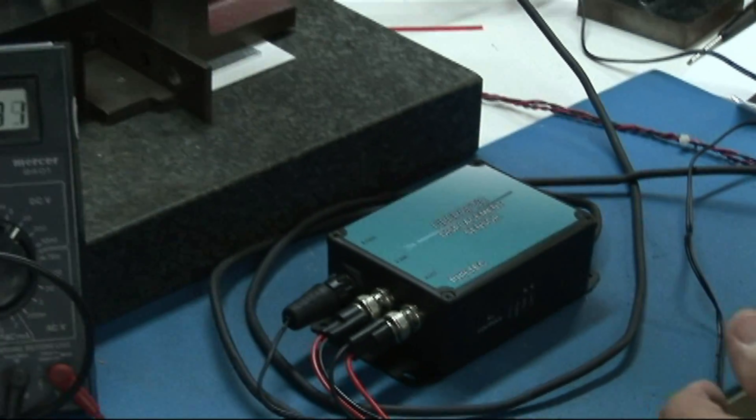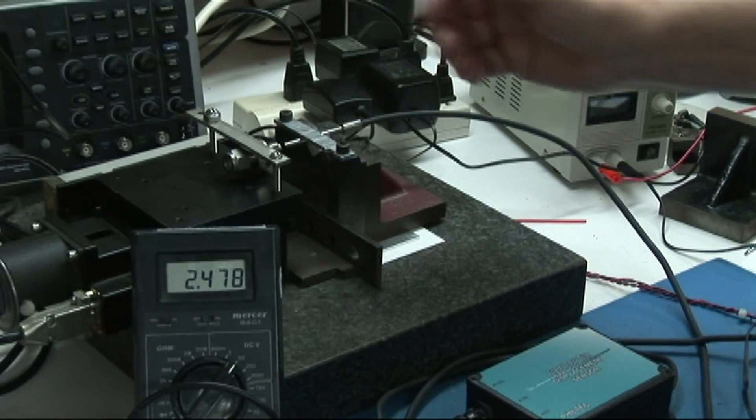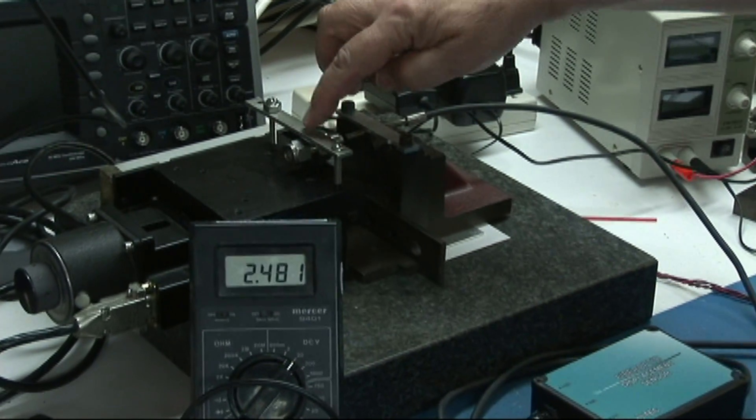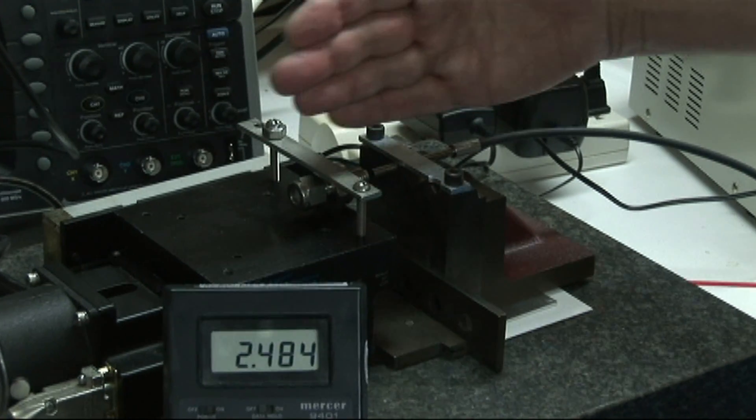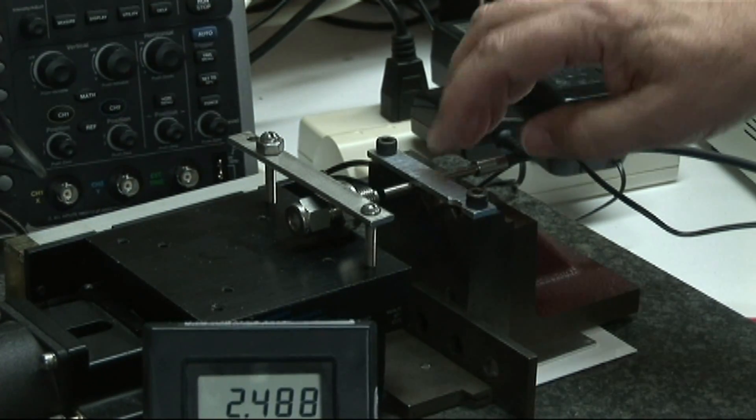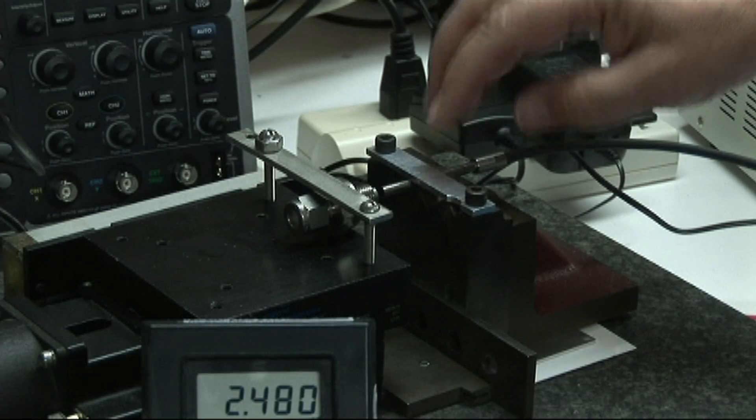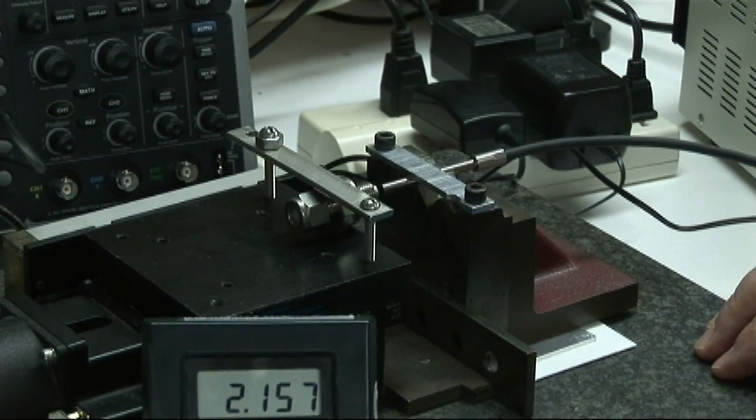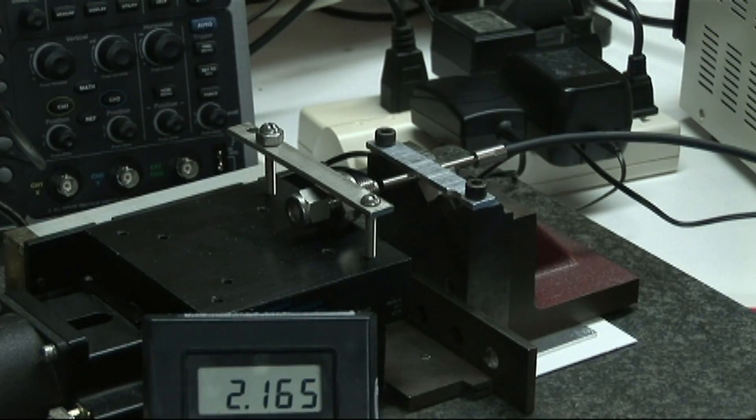Now, on a linear ball-bearing stage here, we have your target pin, which is mounted in a compression fitting and clamped, and it's mounted perpendicular to the axis of motion. We have the sensor tip, mounted perpendicular to the face of your target, and I'm going to run through a calibration first.